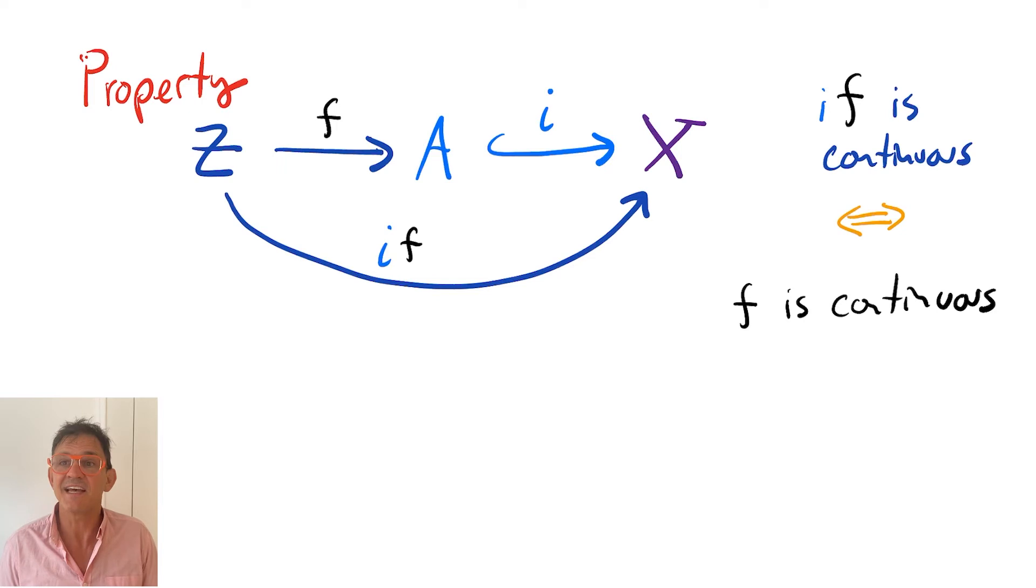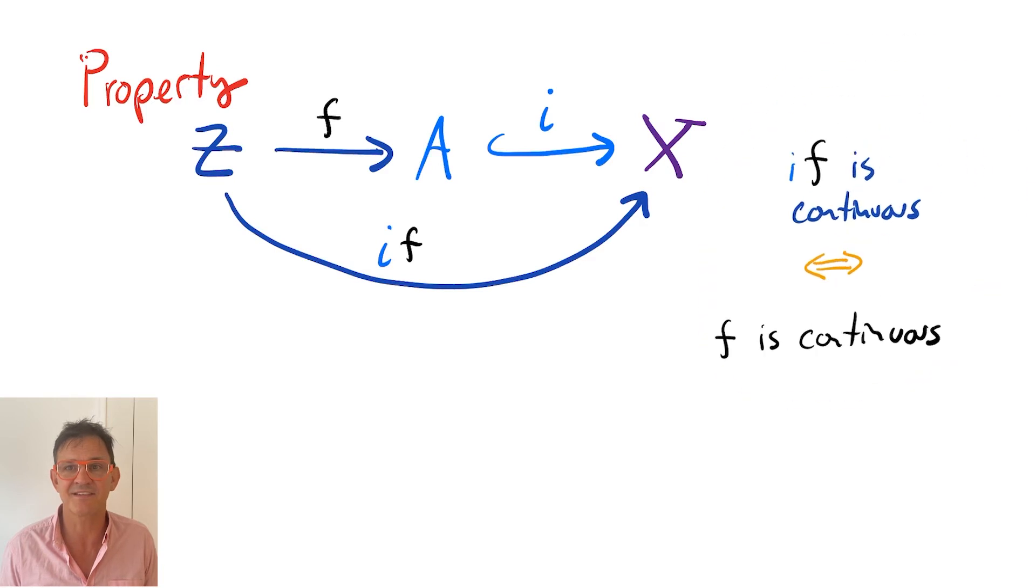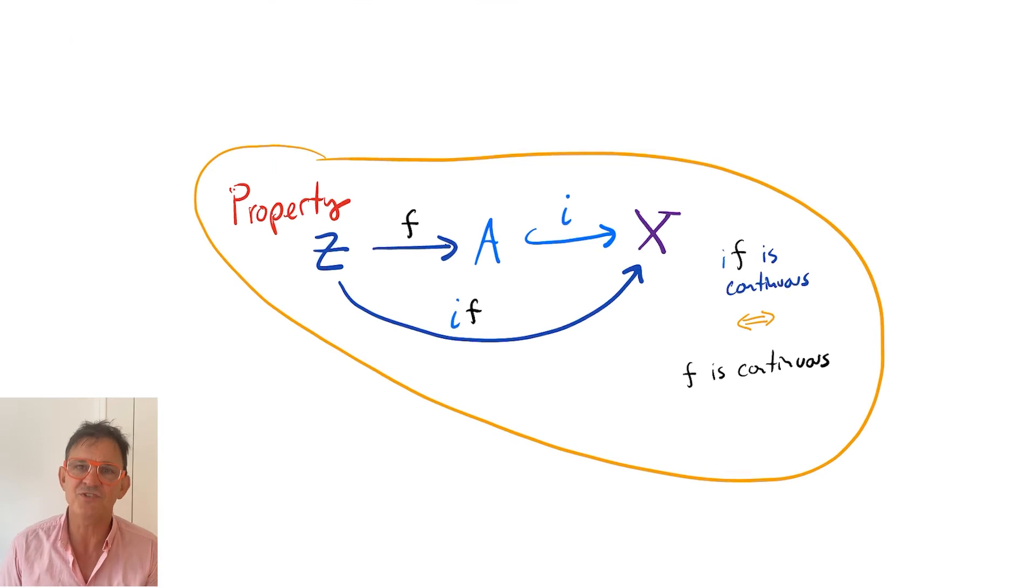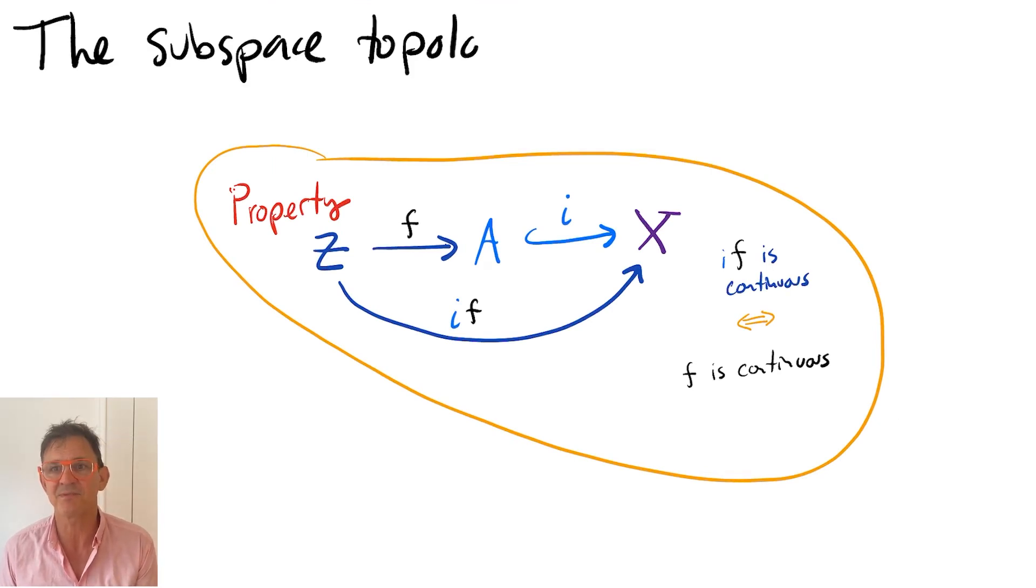For all spaces Z and all functions F from Z to A, the function F is continuous if and only if the composition F followed by the inclusion, which is a map from Z into X, is continuous.